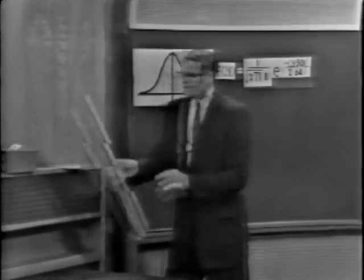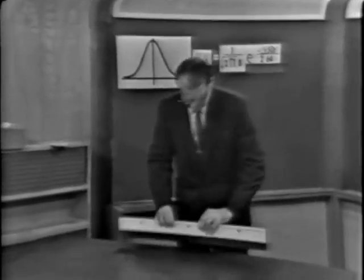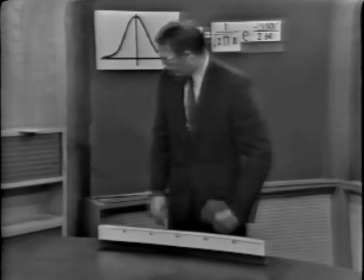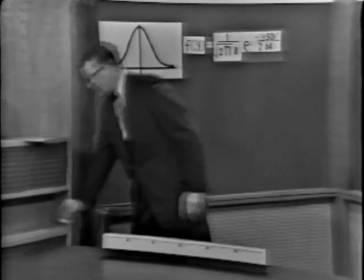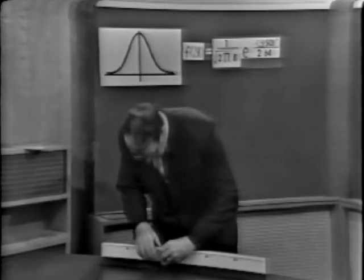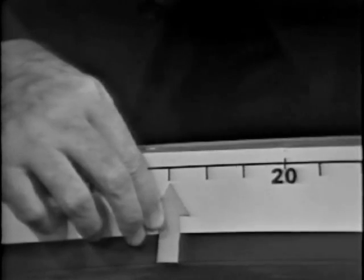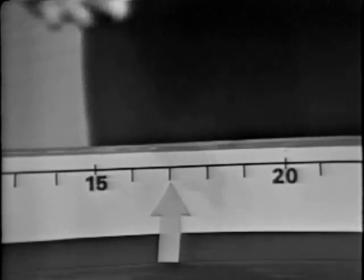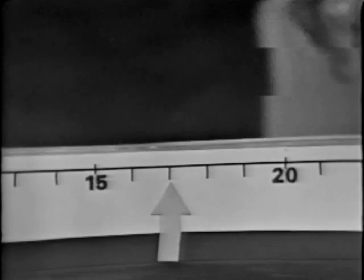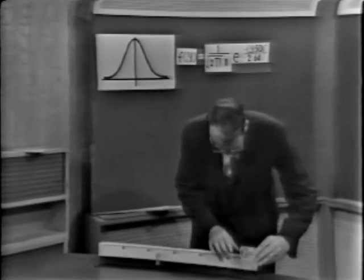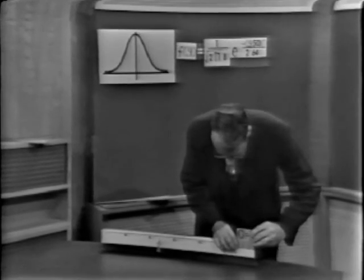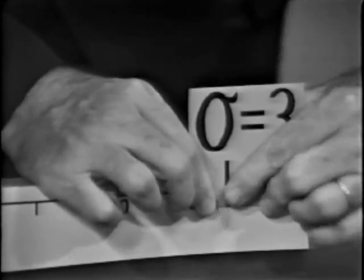Imagine that we have experienced an observation y drawn from a normal distribution, and that this observation y turns out to equal 17. This is an event that has happened to us, and it was spawned by a normal distribution with a variance equal to 9 — that is to say, the standard deviation of this normal distribution is equal to 3.